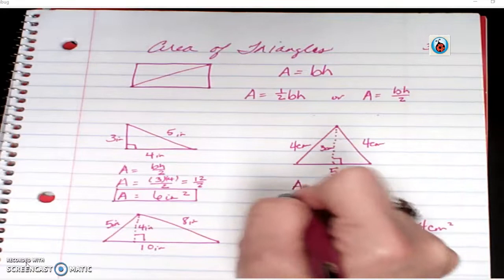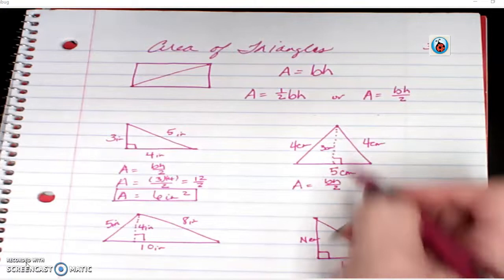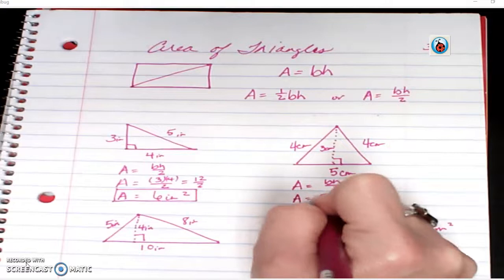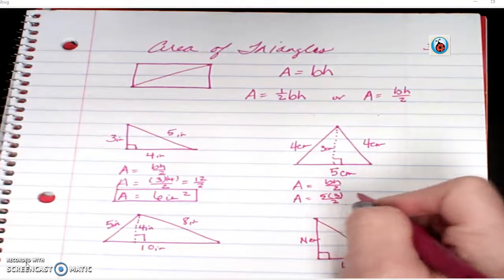On this one, same thing. We have area equals base times height divided by two. Notice I have all these different numbers, but the only ones that matter are the ones that make my right angle. So I have a five and a three. So five times three divided by two.